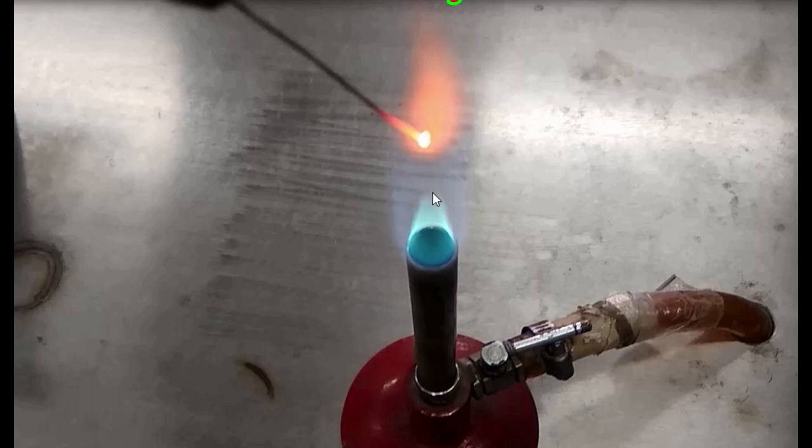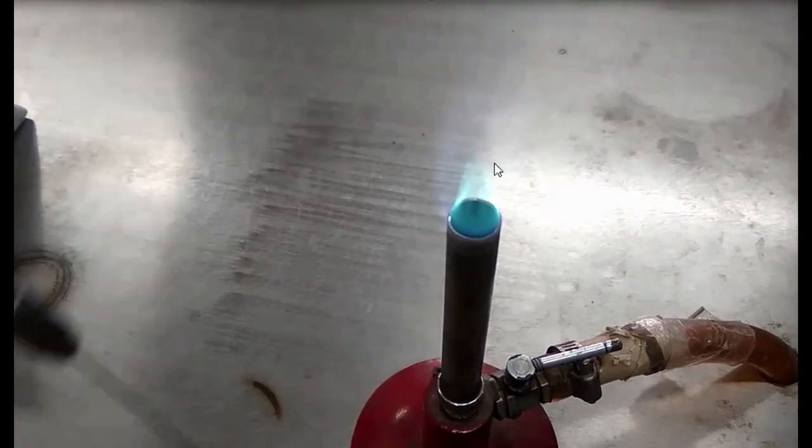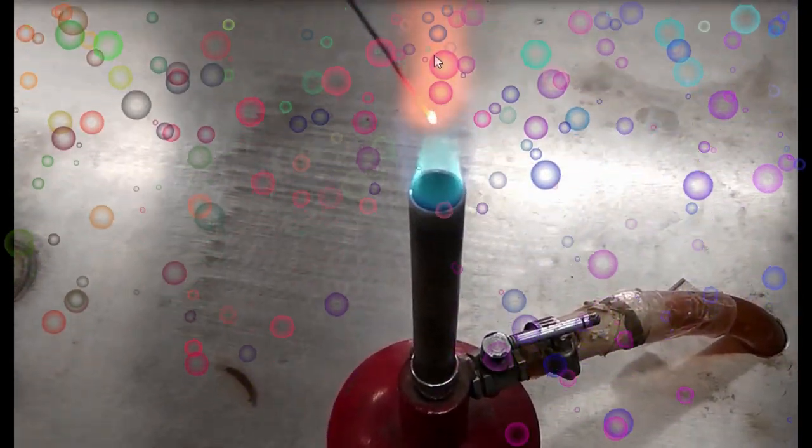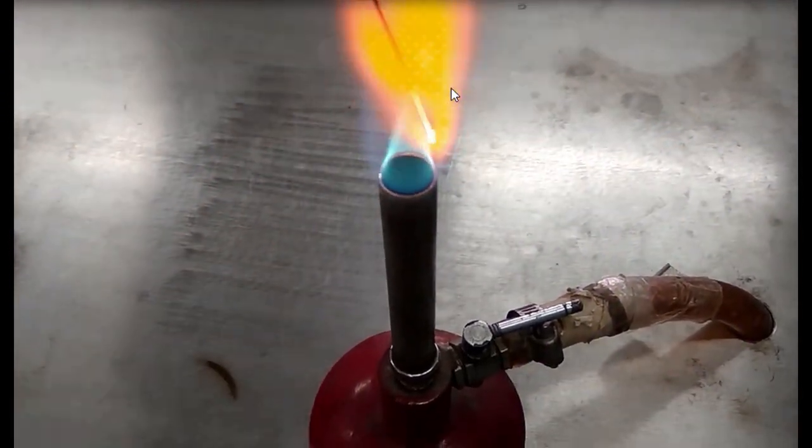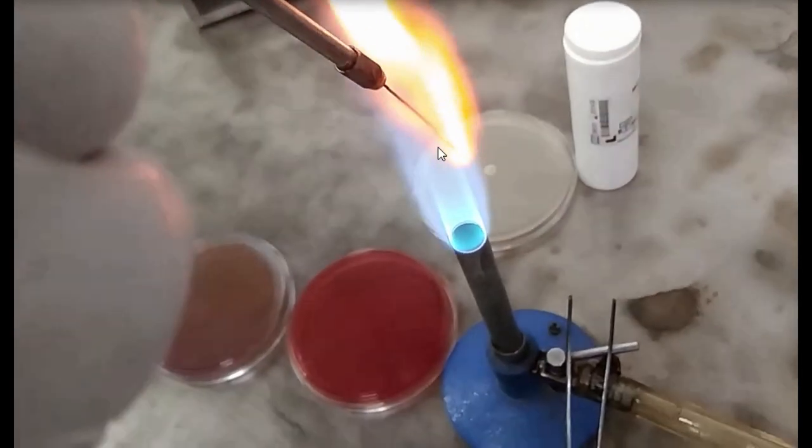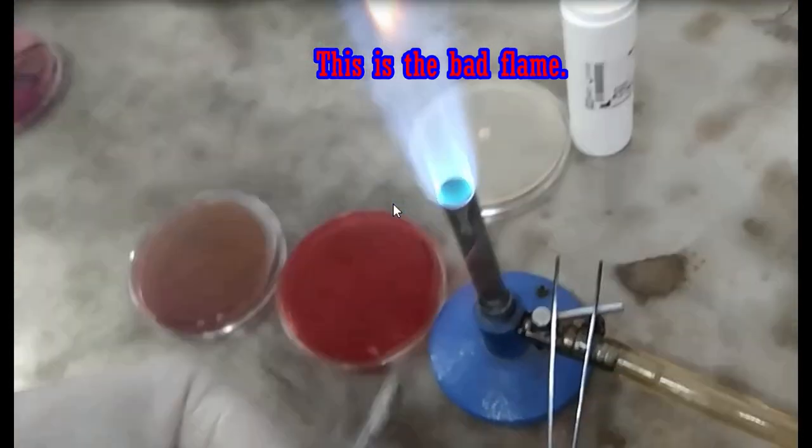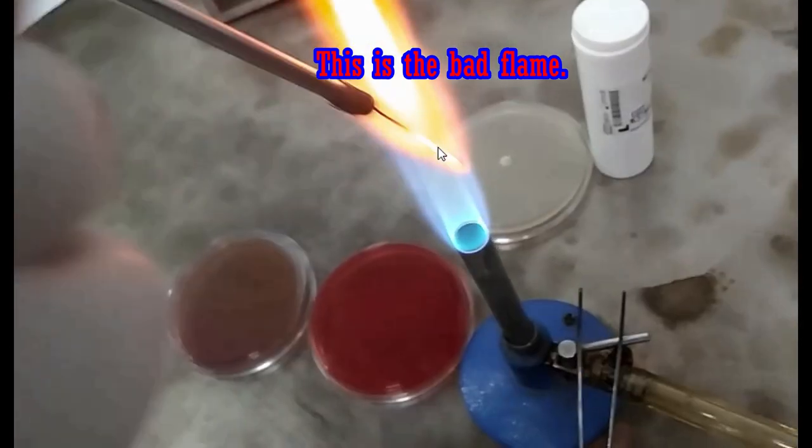This type of blue coloration flame is an indicator of good flame. In simple terms, a mixture of yellow color in the flame is an indicator of bad flame.